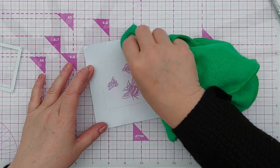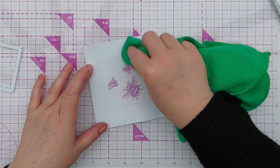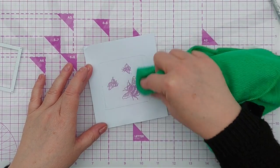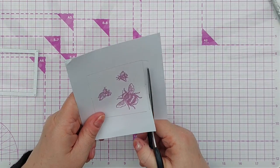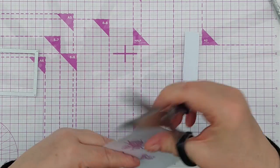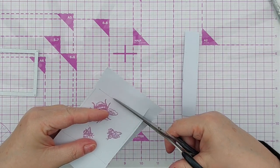Now that my embossing powder has cooled and set, I can buff off any color with a microfiber cloth. What I'm going to do next is die cut my little square from this.